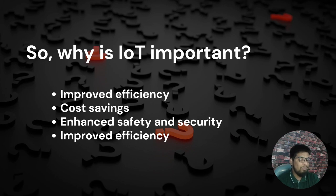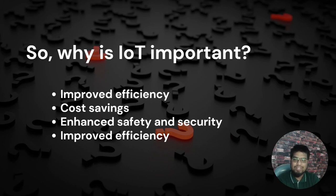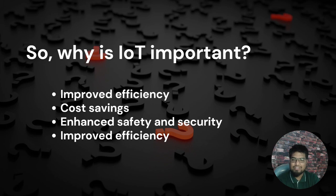Similarly, IoT devices also help in enhancing safety and security. They can be used to monitor and control various systems such as home security systems and industrial machinery, and also prevent accidents and breaches. One very good example is alarm systems and fire alarm systems, where they trigger all possible responses based on the fire.